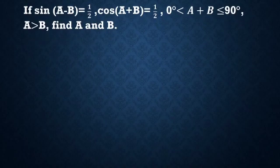Problem: If sin(A-B) = 1/2, cos(A+B) = 1/2, 0° < A+B ≤ 90°, A > B, find A and B.